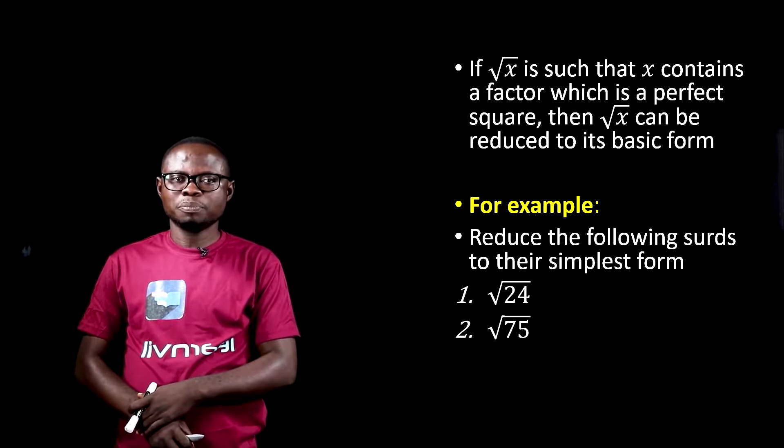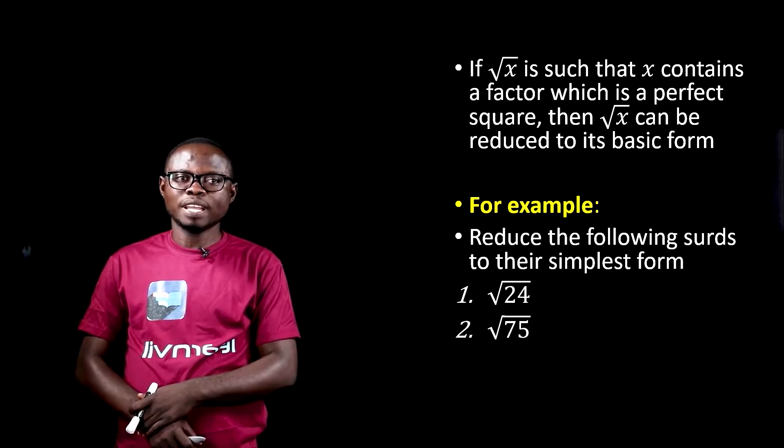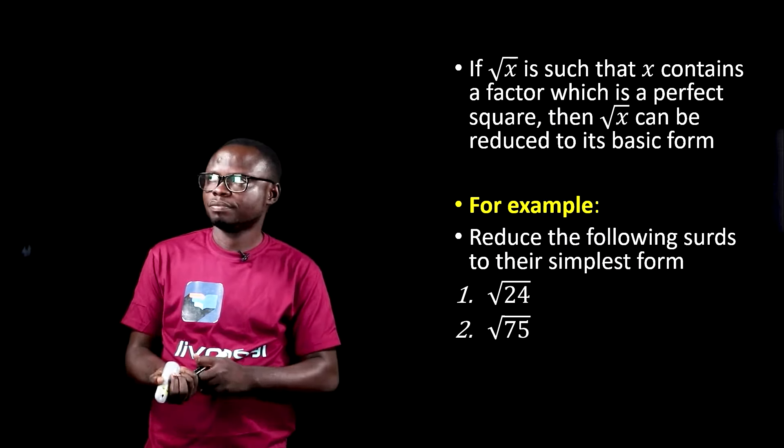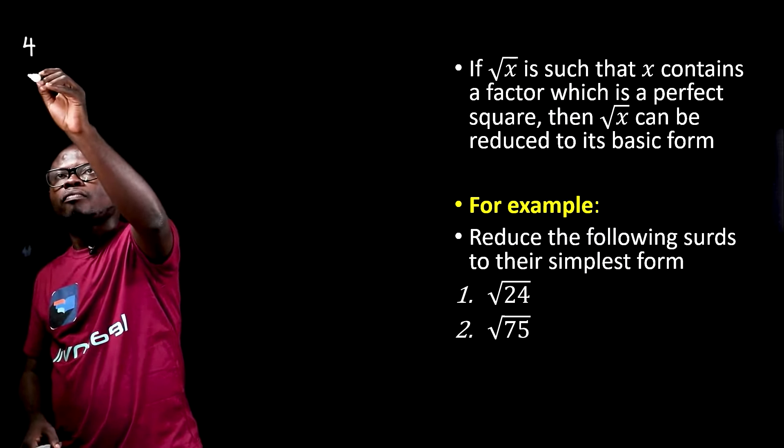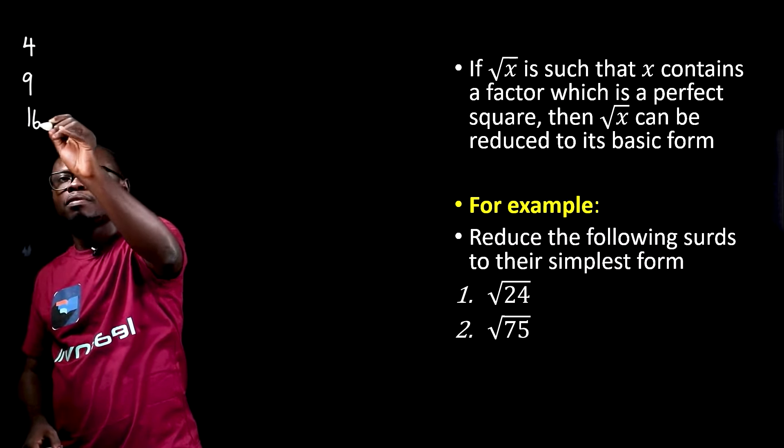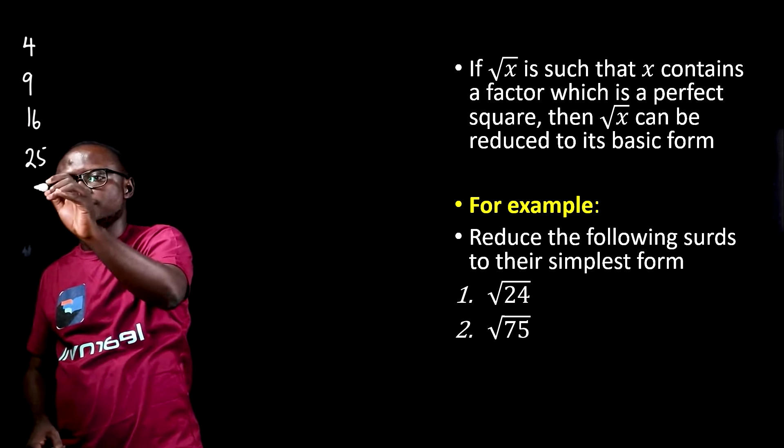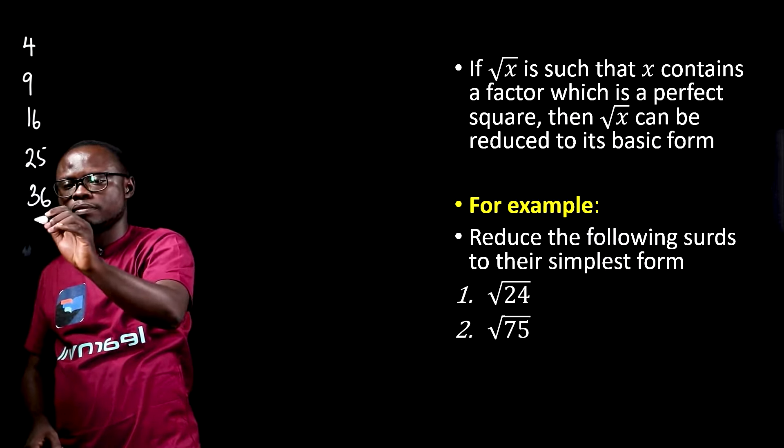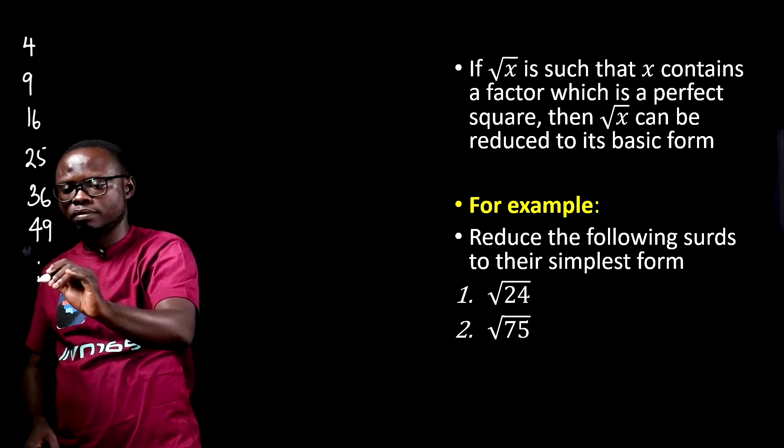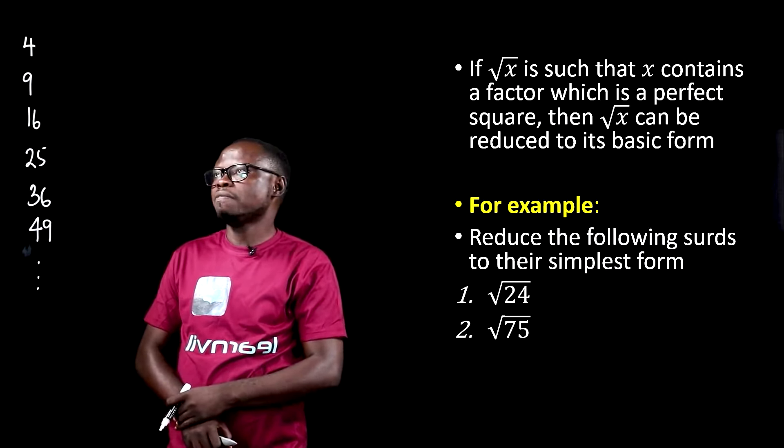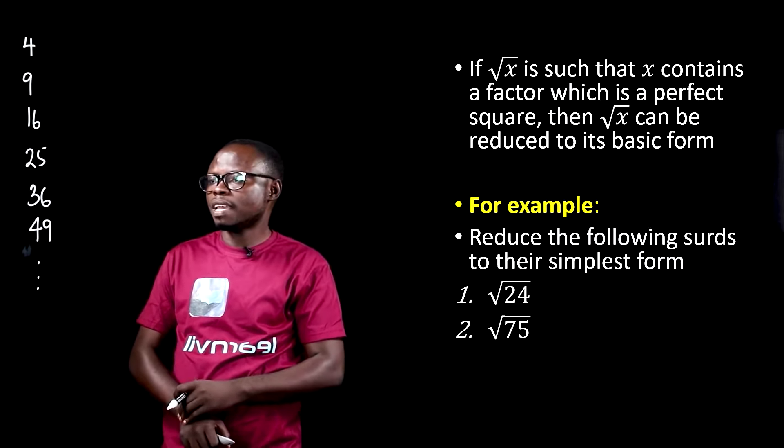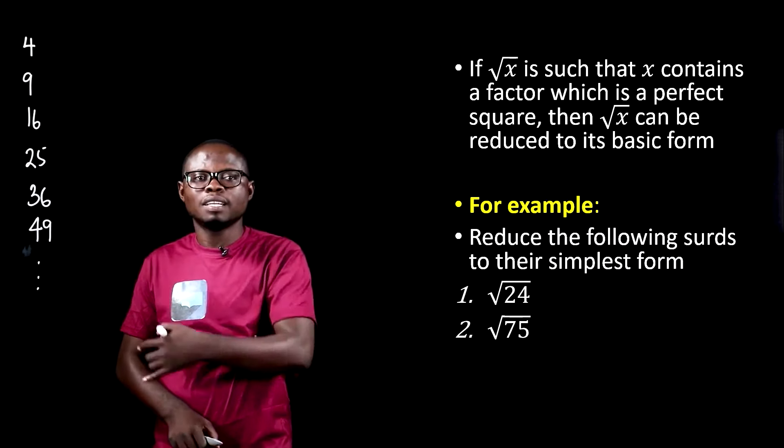Now, before we go on, let us put down some squared numbers. For squared numbers, we have 4, 9, 16, 25, 36, 49, and the list goes on.